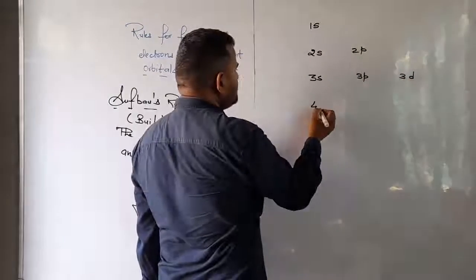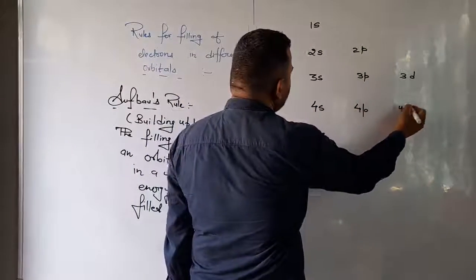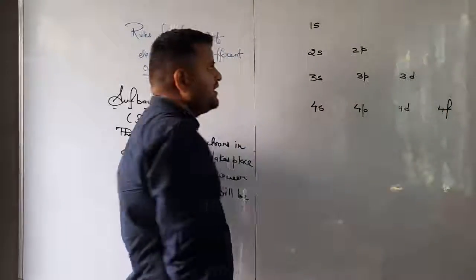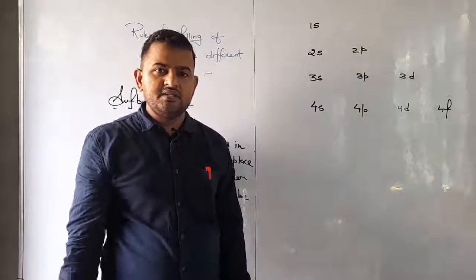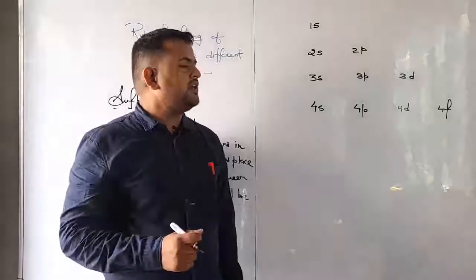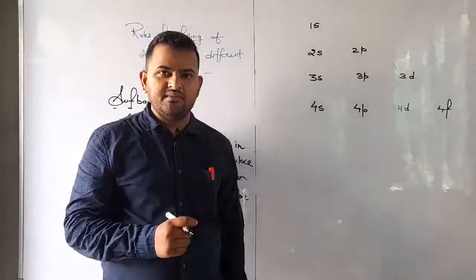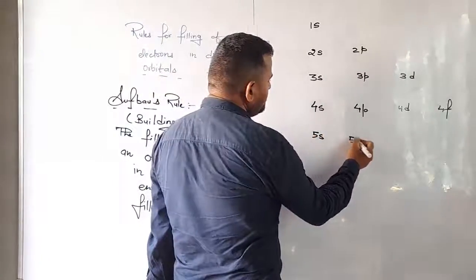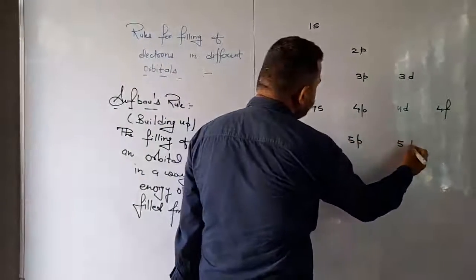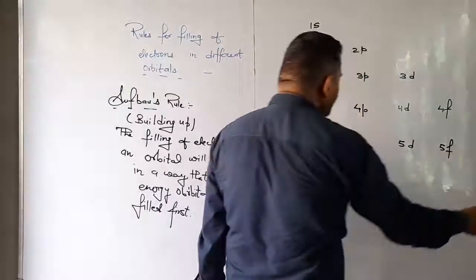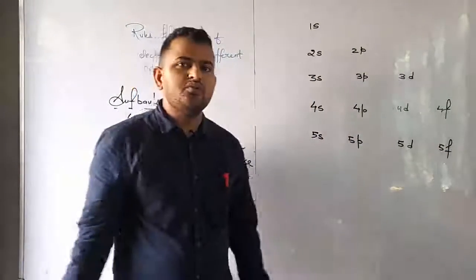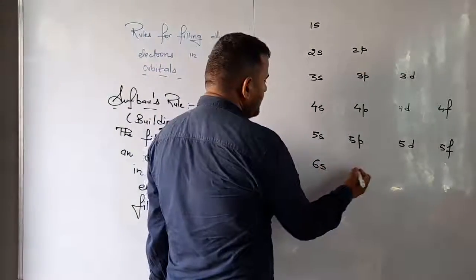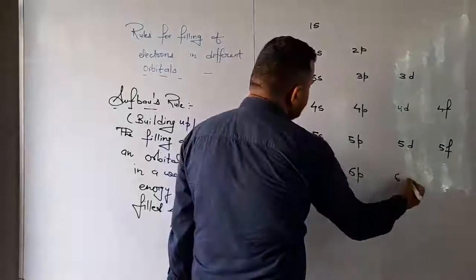Then we have 4s, 4p, 4d, and 4f. We represent sub-shells as s, p, d, f and the numbers 1, 2, 3, 4 represent the energy level. These are the energy levels and the corresponding sub-shells.